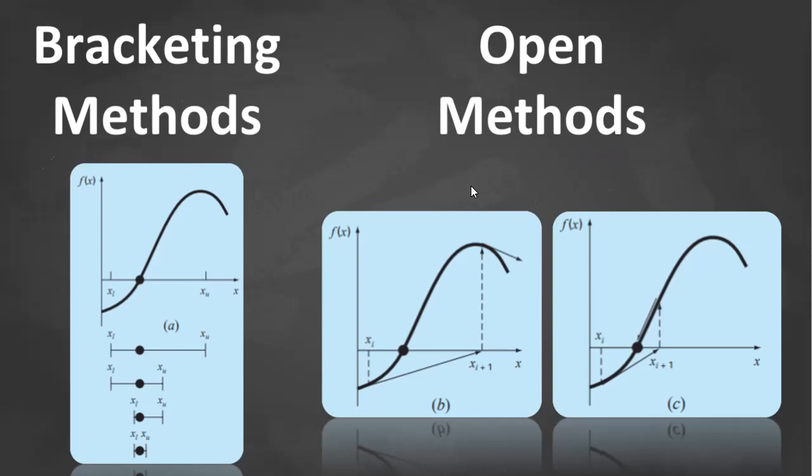The bracketing methods, namely the bisection method and the false position method, are based on a graphical insight. In these methods, the root is located within an interval, as you can see here, x lower and x upper. Within this interval is the root. Repeated application of the bracketing methods always results in closer estimates of the true value of the root. As you can see in this progression, such methods are said to be convergent because they move closer to the truth as the computation progresses.